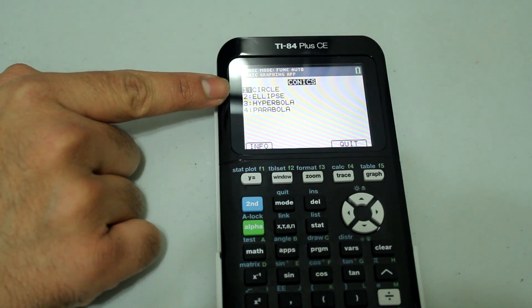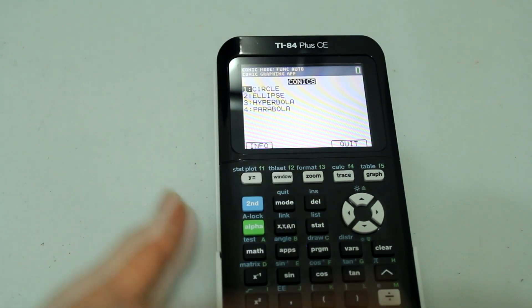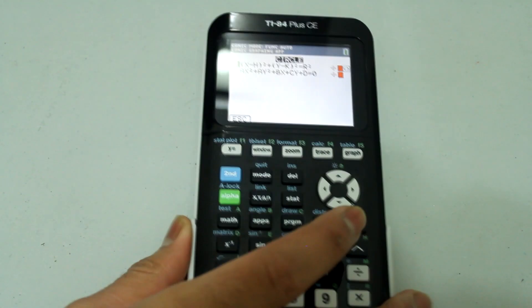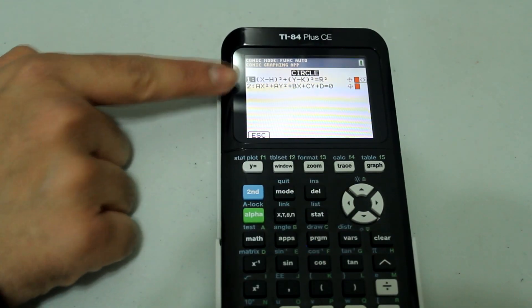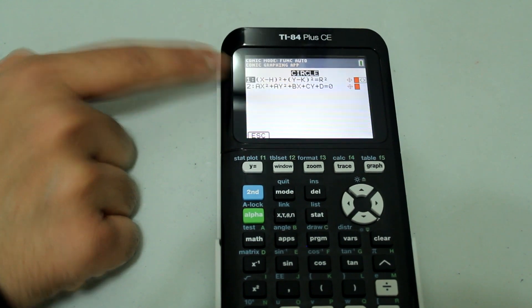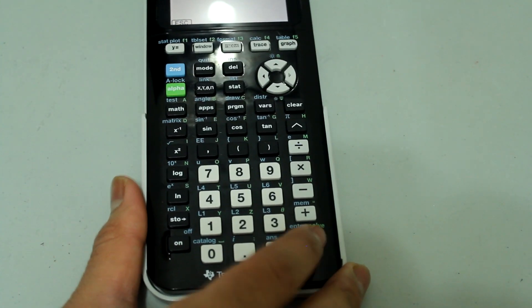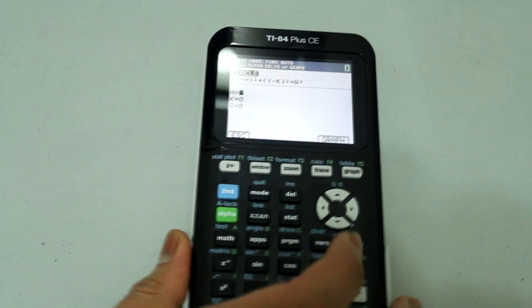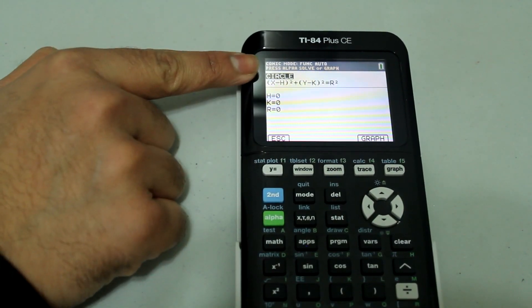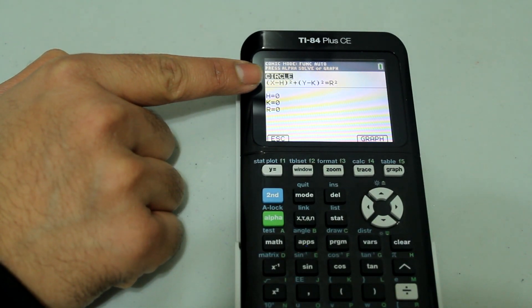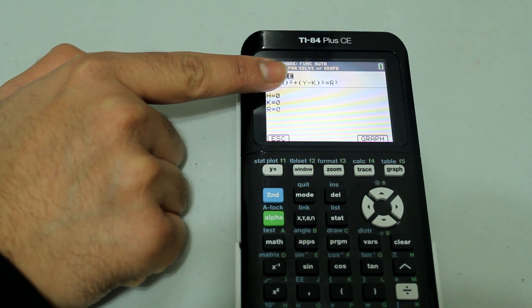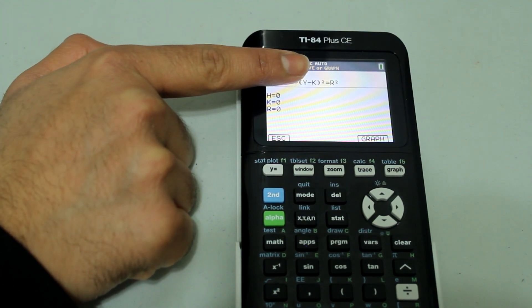And then let's select circle so just press enter and now we want to type it in this form. So we are just going to press enter and notice it has the form that I showed earlier x minus h squared plus y minus k squared equals r squared.